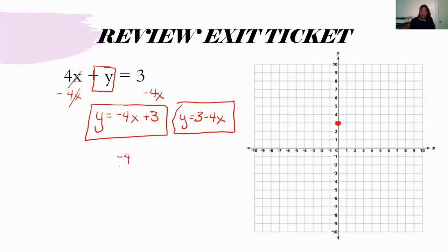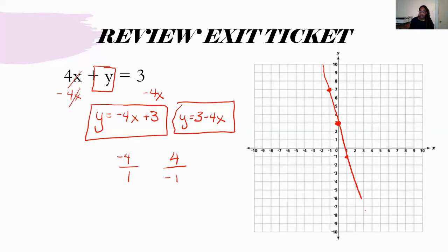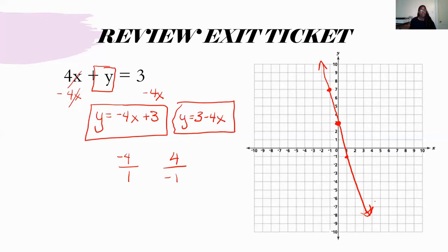Any time you have a whole number slope, it's always going to be over 1. So from my Y-intercept, I'm going to go down 4 and to the right 1. We also talked last time about how 4 could be over a negative 1 — starting at my Y-intercept, I go up 4 and over to the left 1, so that point is also on the line. With negative slopes, you just have to have the negative sign either in the numerator or the denominator, not both, because having it in both would make it a positive slope.